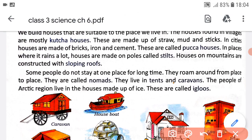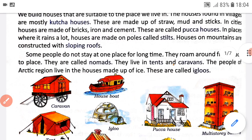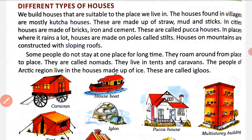Joe houses cities mein banai jate hai, yeh kahe jate hai pakka houses. In houses ko banane ke liye use kia jata hai bricks, eaton, iron, cement aur steel ka. In places where it rains a lot, houses are made on poles called stilts.